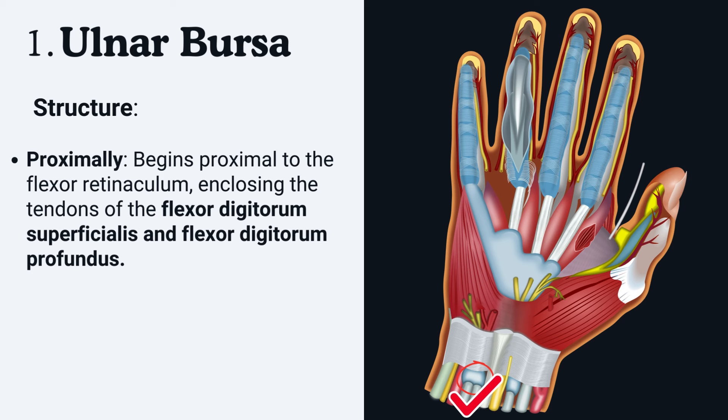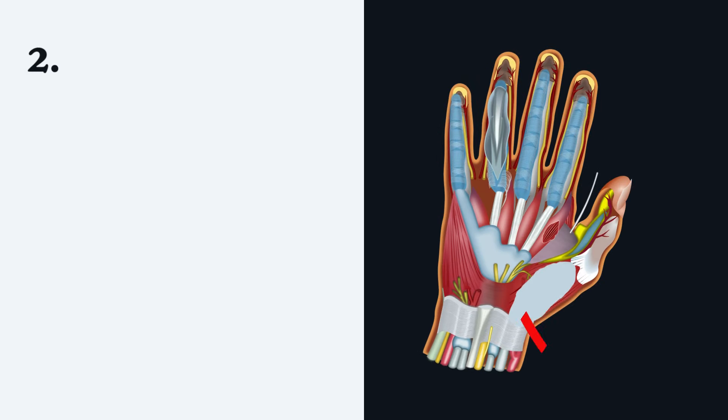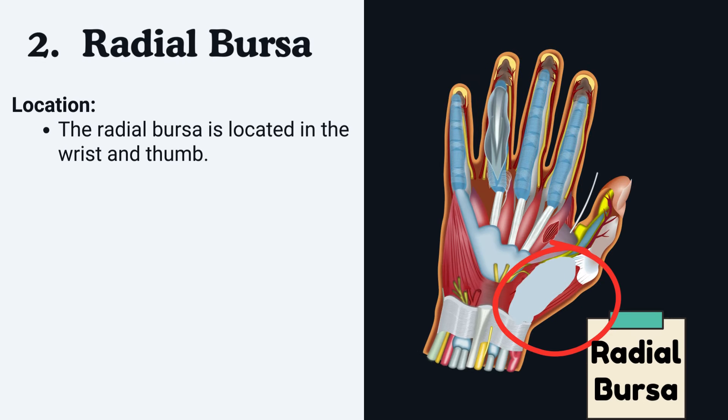Structure of the ulnar bursa: proximally, it begins proximal to the flexor retinaculum, enclosing the tendons of the flexor digitorum superficialis and flexor digitorum profundus. Distally, it extends into the little finger where it becomes continuous with the digital synovial sheath of the little finger.